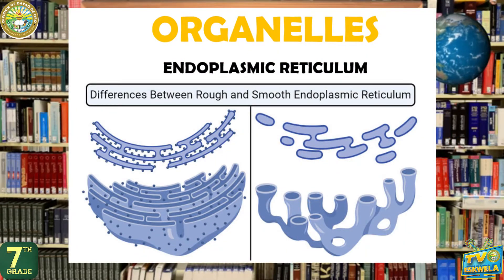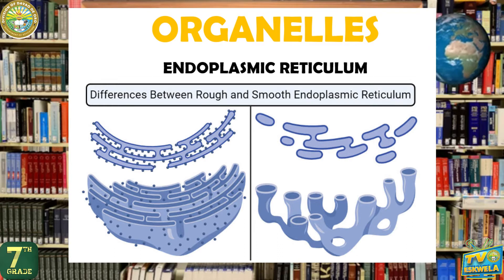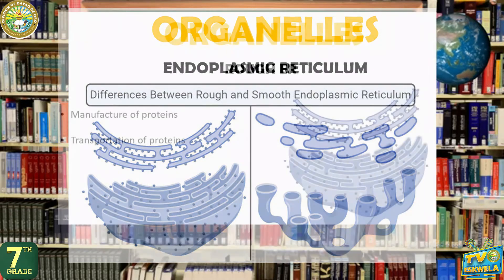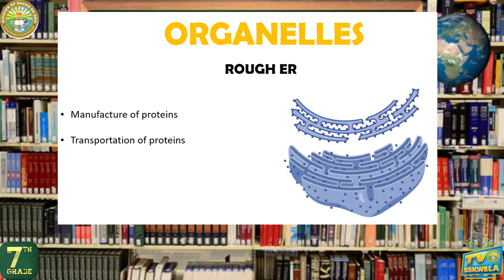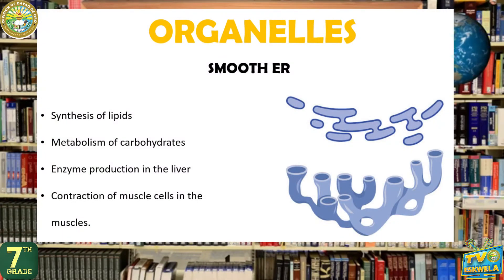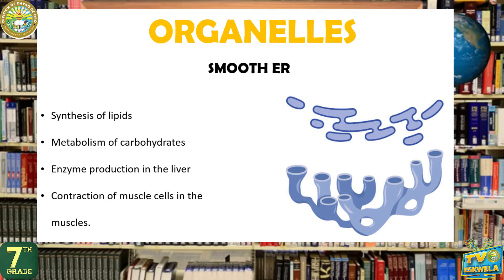Another organelle is the endoplasmic reticulum, or ER for short. There are two types of ER: the smooth ER and the rough ER. The smooth ER is named so because it lacks a ribosome surface. The rough ER is the opposite — since the rough ER has ribosomes, it is involved in the manufacture of proteins in the cell. The rough ER also helps in transportation of proteins. On the other hand, the smooth ER is involved in the synthesis of lipids like phospholipids, which are used to build the cell membrane. Other functions of the smooth ER include metabolism of carbohydrates, enzyme production in the liver, and contraction of muscle cells.